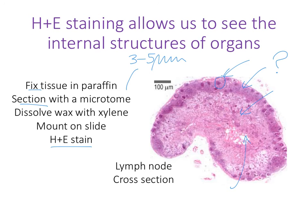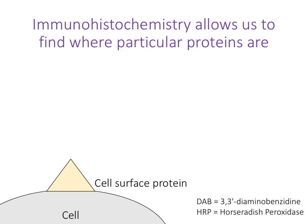We're going to be thinking about what those different structures are and what the different staining tells us about the structure and function of those organs. However, for a really good understanding of immunology it's not good enough to just know the overall shapes of tissues. We'd really like to know which particular cells we're looking at. An H&E stain will show us where lymphocytes are, but it won't tell us the difference between B cells and T cells. To do that we need a technique called immunohistochemistry — the 'immuno' bit implies that we're doing something to do with antibodies.